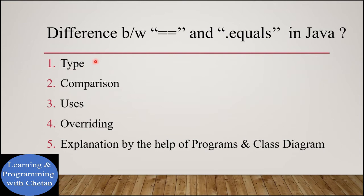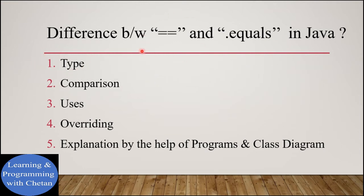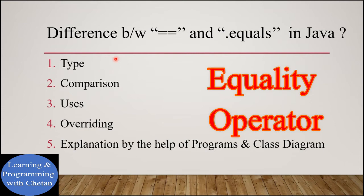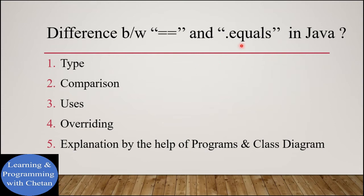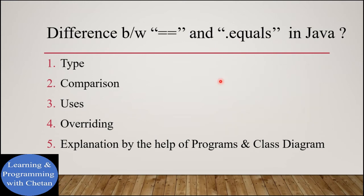Let us understand our first difference on the basis of type. The double equal is an operator in Java programming language, also known as the equality operator. Whereas dot equals is a method which is present inside the java.lang.Object class in Java programming language.